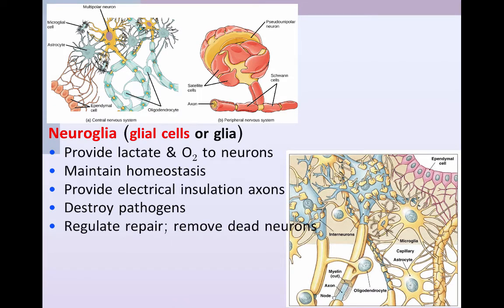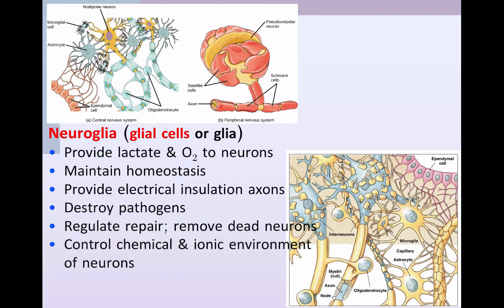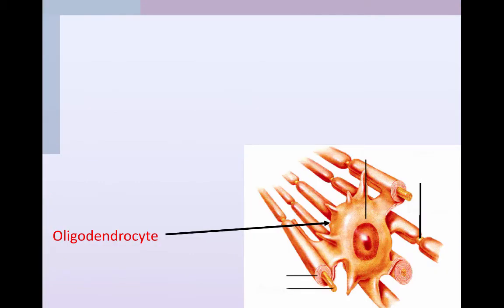Glial cells also help to destroy pathogens, acting as the immune representatives in the central nervous system. They help to regulate repair and remove dead neurons, so when we have injury to the brain the glial cells become important. They also help to control the chemical and ionic environment of neurons, and it turns out they actually play a role in thought, cognition, and memory.